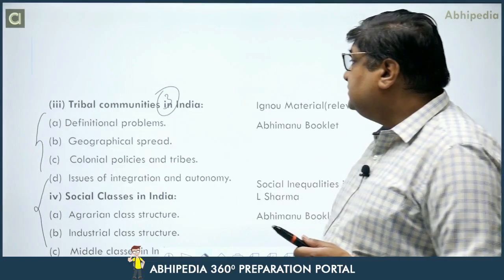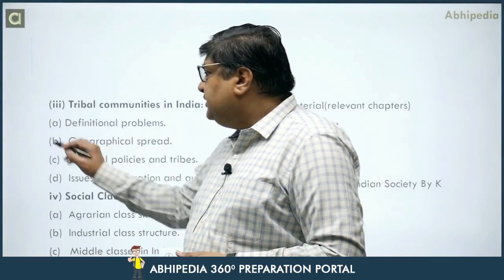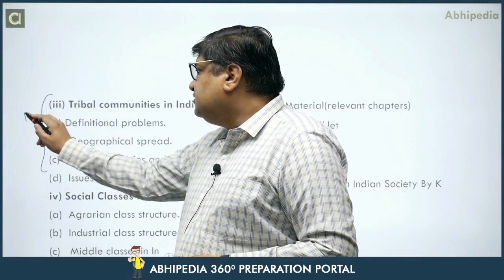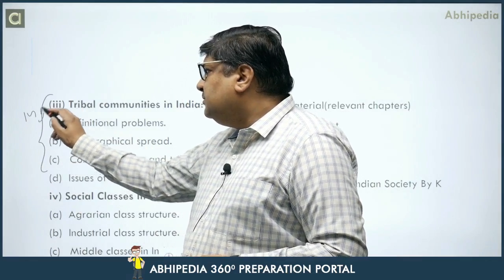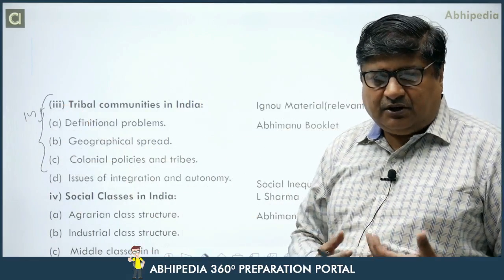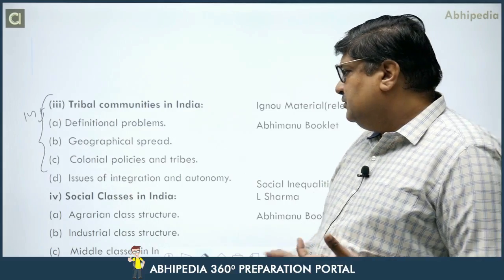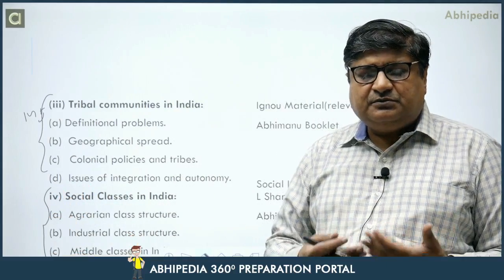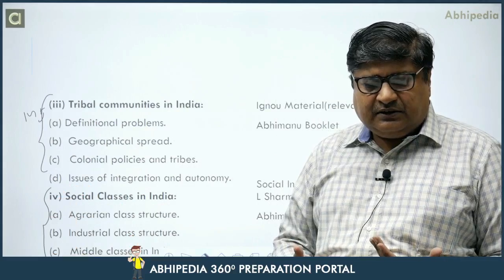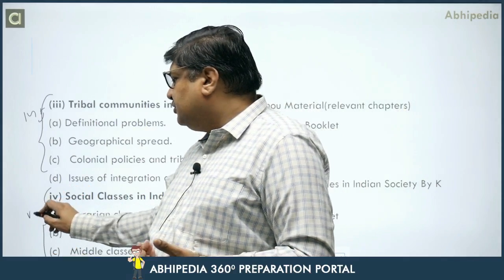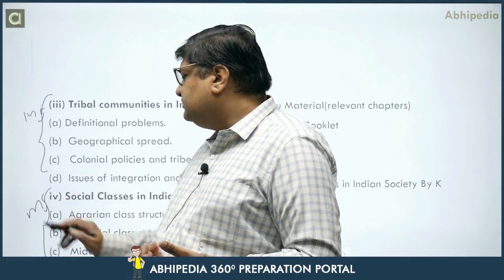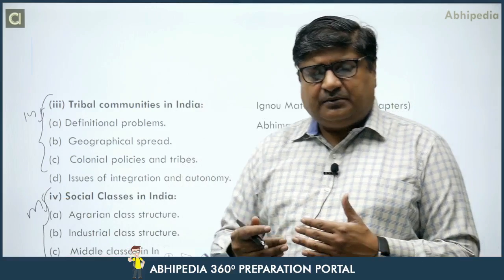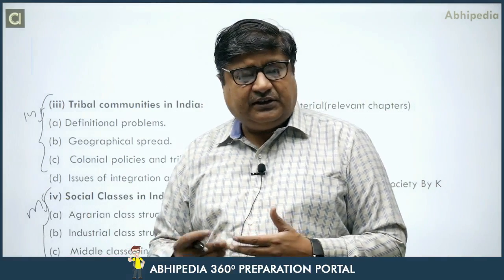Next is tribal communities — this is a medium important chapter; it's not a very big chapter. We have to cover it but not dig deep into it. Then the next chapter is social classes, where we cover agrarian classes, industrial classes, and middle classes. This is also a medium important chapter — three topics to cover. Sometimes a question comes from it, sometimes not; it does not come every time.